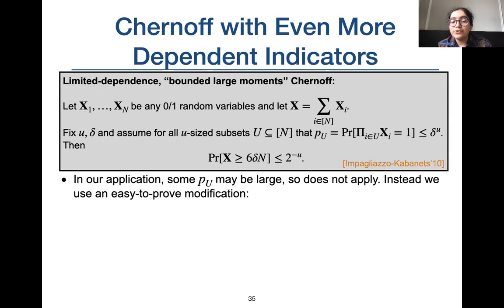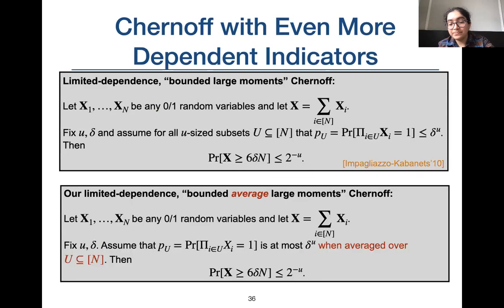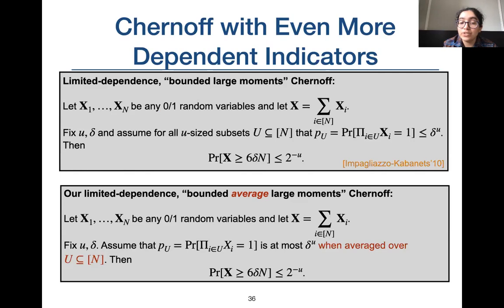In our application, an adversary could find collisions on every salt in some u-size set with larger probability, so the required bound of δ^u may not hold for every u-size subset. Our variation relaxes the quasi-independence requirement: we only assume an upper bound of δ^u on succeeding on a randomly chosen u-size subset instead of every u-size subset, again bounding the probability of sum exceeding 6δn to 2^{-u}. The proof is a simple extension of the Impagliazzo-Kabanets proof.